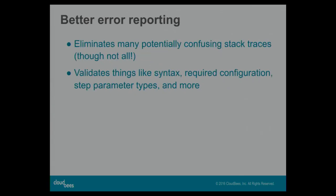It errors out at the very beginning of the build, telling you what the error was and giving you suggestions for what you might have meant if you had a typo in a parameter name. Through this, we're able to eliminate many of the potentially confusing stack traces that pipeline can give you when things go wrong. Not all of them — there are still some that can sneak through — but a lot of the most commonly encountered and mystifying stack traces will now give you a clear error message about what's wrong in your pipeline definition.